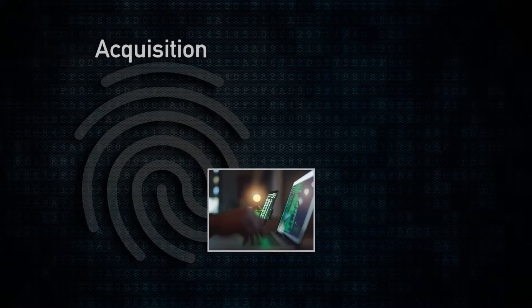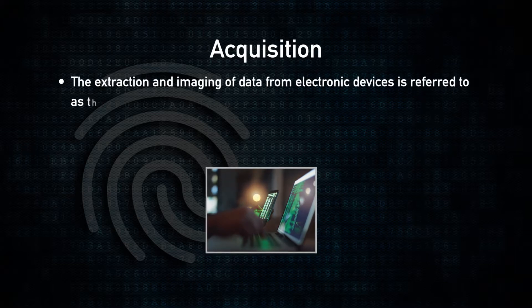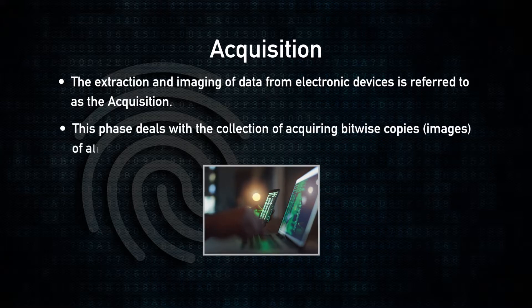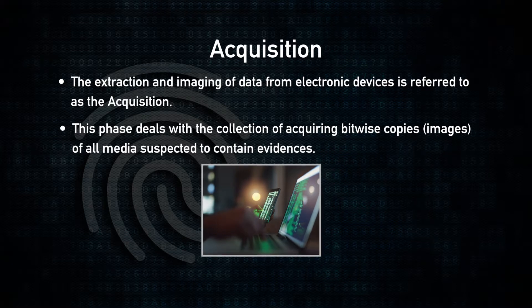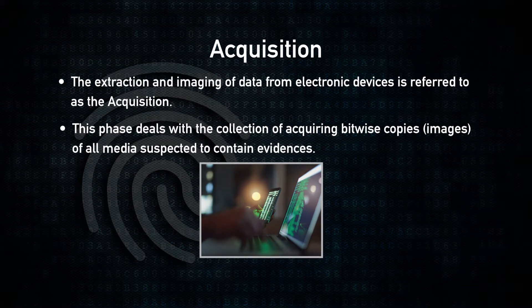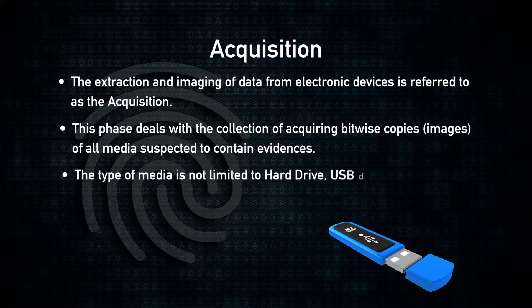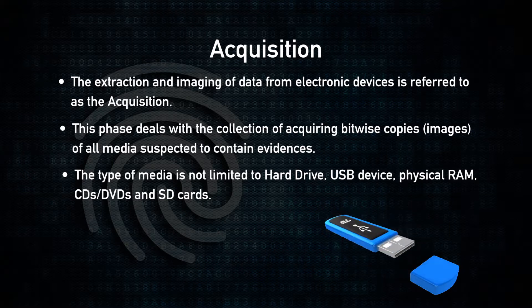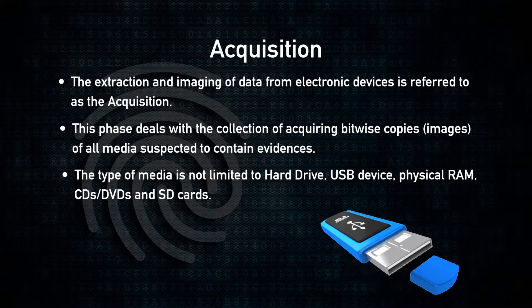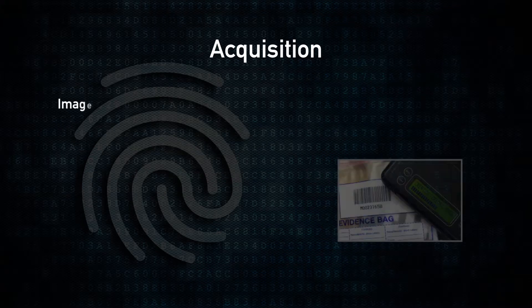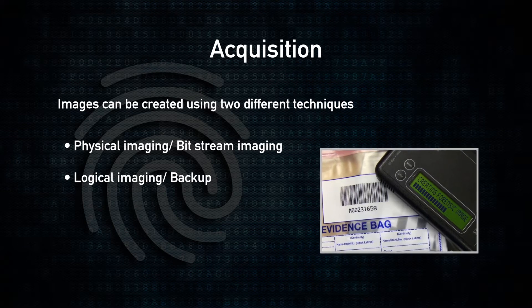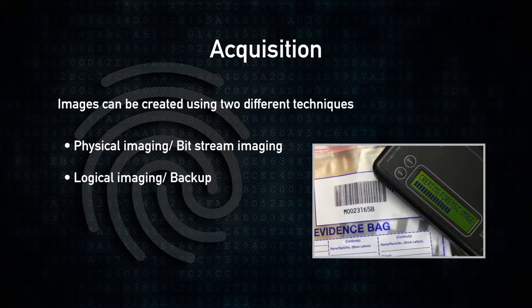The third step is acquisition. The extraction and imaging of data from electronic devices is referred to as acquisition. This phase deals with collecting bitwise copies or images of all media suspected to contain evidences. The type of media is not limited to hard drives alone — it may be a hard drive, a USB device, a physical RAM, CDs, DVDs, and sometimes even SD cards. Images can be created using two different techniques: physical imaging or bitstream imaging, and logical imaging or backup.